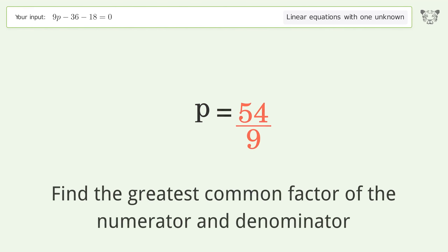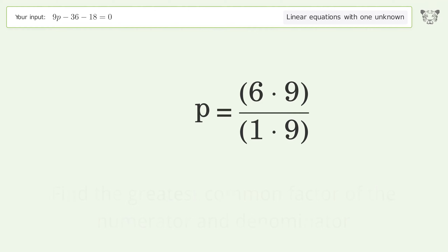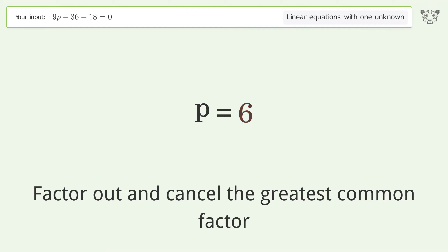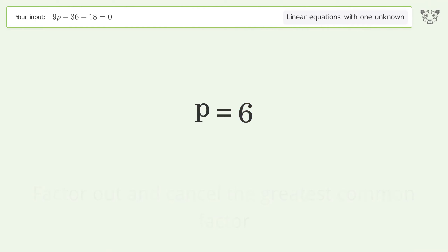Find the greatest common factor of the numerator and denominator, then factor out and cancel the greatest common factor. The final result is p equals 6.